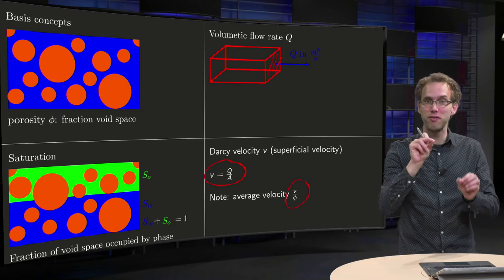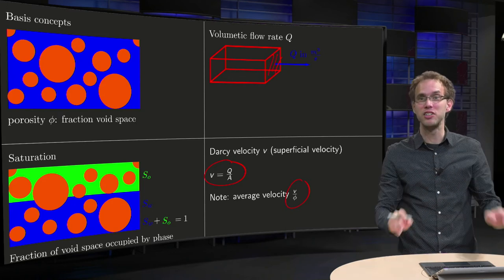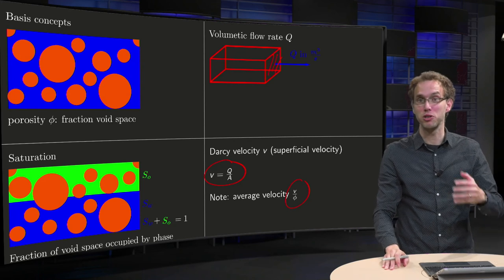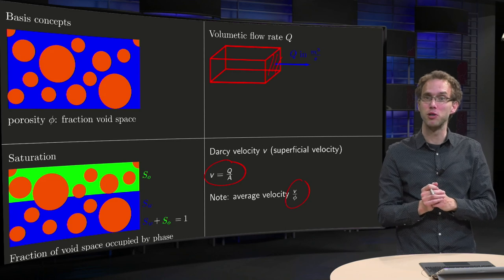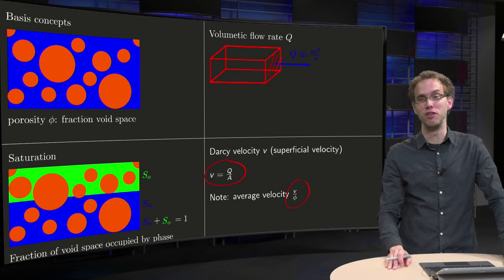However, measuring those average velocities everywhere inside the porous medium is very difficult, of course you cannot see through it, so what is often used to describe velocities in the porous medium is the so-called Darcy velocity.